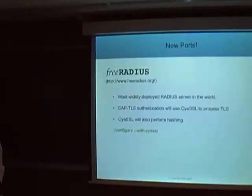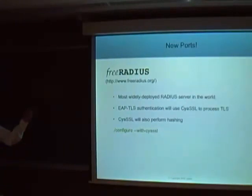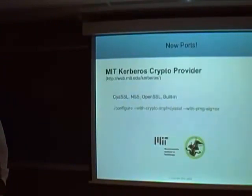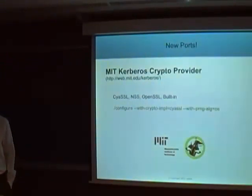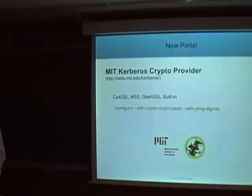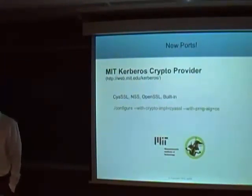We're in FreeRADIUS now, one of the most widely deployed RADIUS servers, as a build option. CYASL will do hashing as well as provide authentication through EAPTLS. We are now a crypto provider for MIT Kerberos, alongside NSS, OpenSSL, and MIT's built-in crypto. We also just finished bringing Kerberos and the GSS API to Android, which were previously lacking on that platform — this should help developers wanting to secure their Android applications.